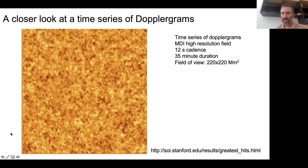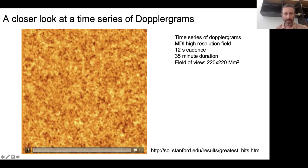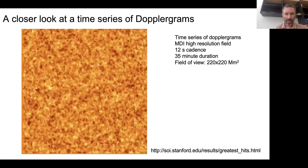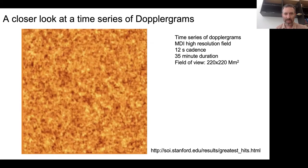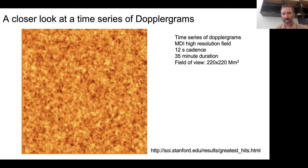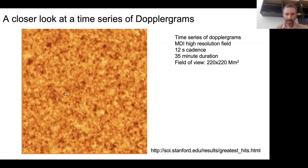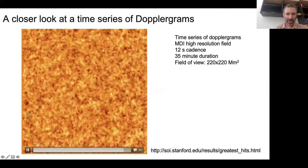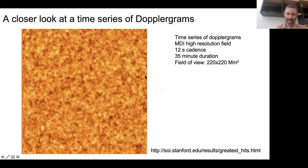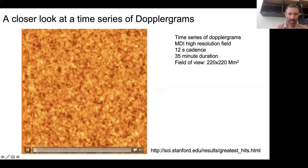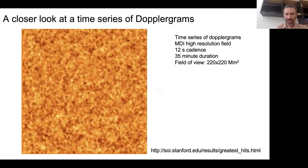We can take a closer look at a time series of Dopplergrams. This movie is from the MDI high-resolution field of view with a cadence quite a bit higher than the normal MDI cadence - these are 12-second cadence images - and we're looking at 35 minutes of data. You see a combination of the P-modes and small-scale convection. If you let your eyes fuzz the image out, it's a little easier to see the P-modes. It's pretty amazing that you can take something that looks like that and make measurements from it that mean something - it just looks like noise, but there's actually a lot of information in there.